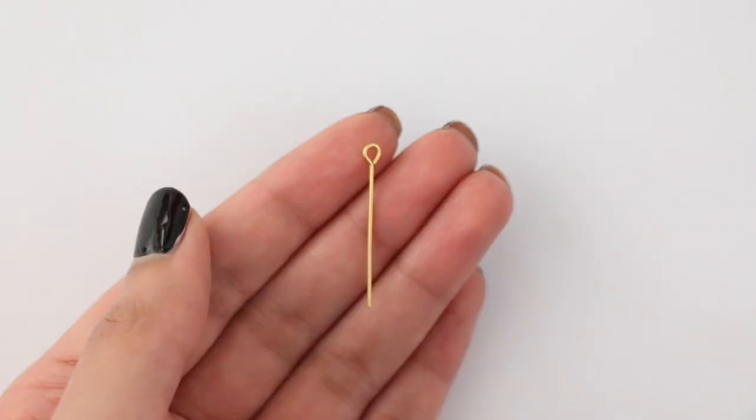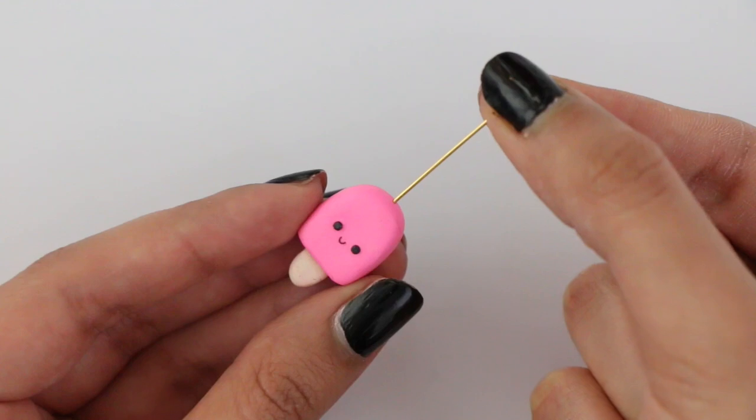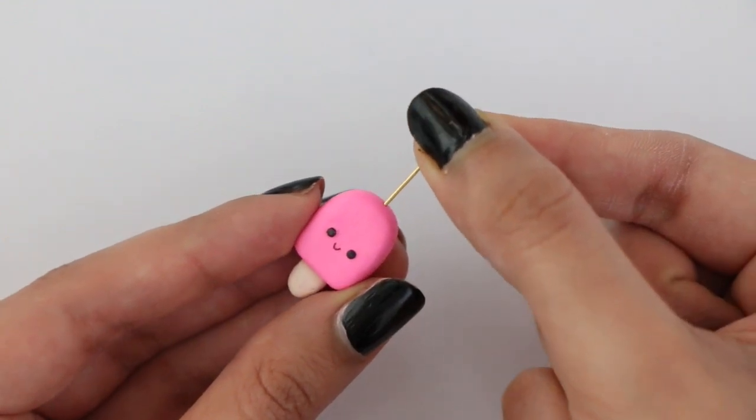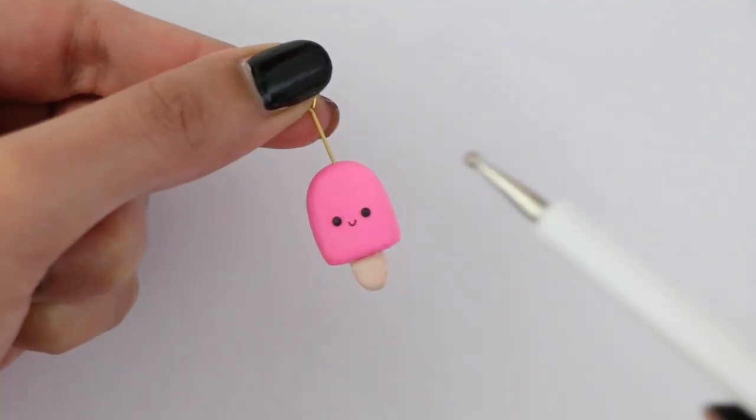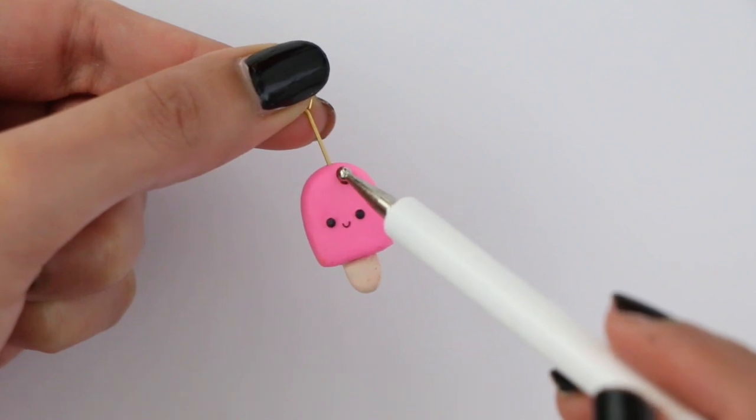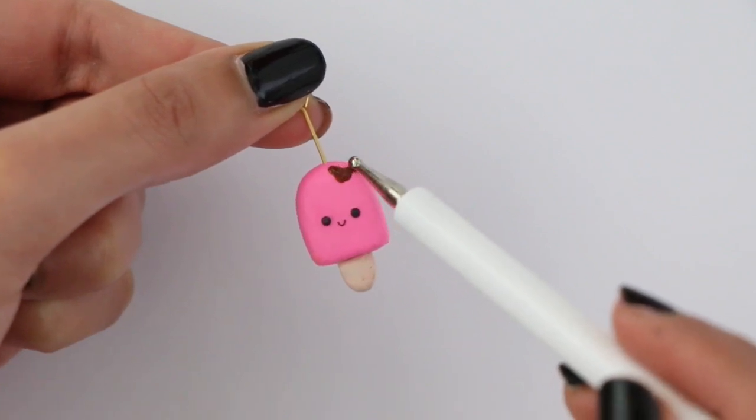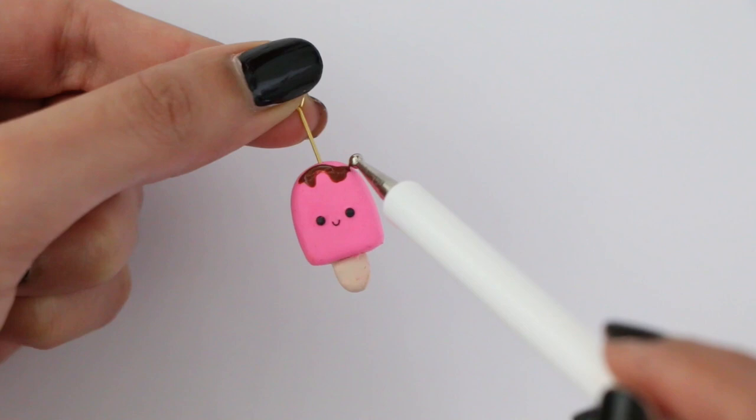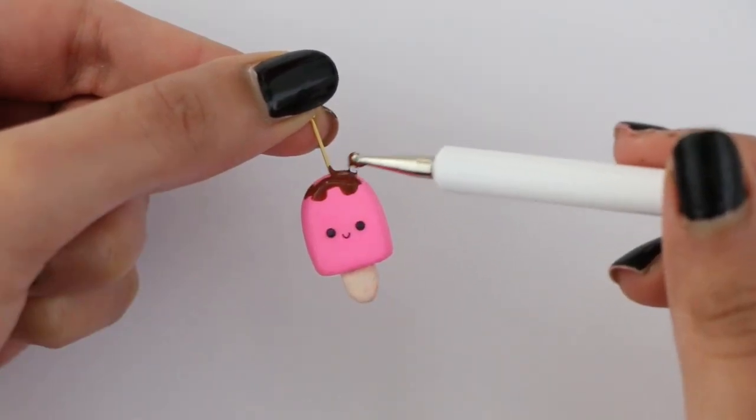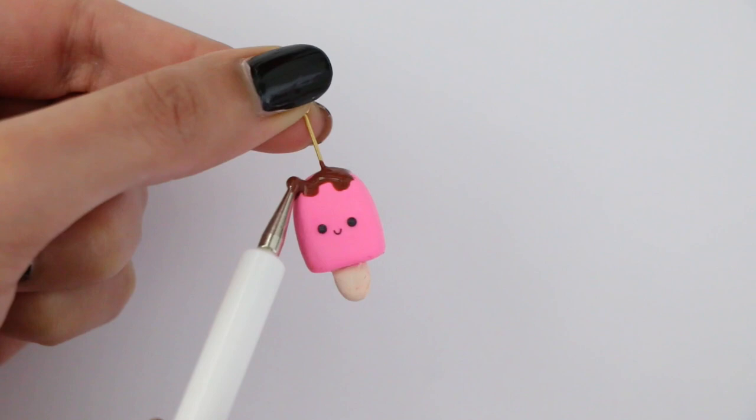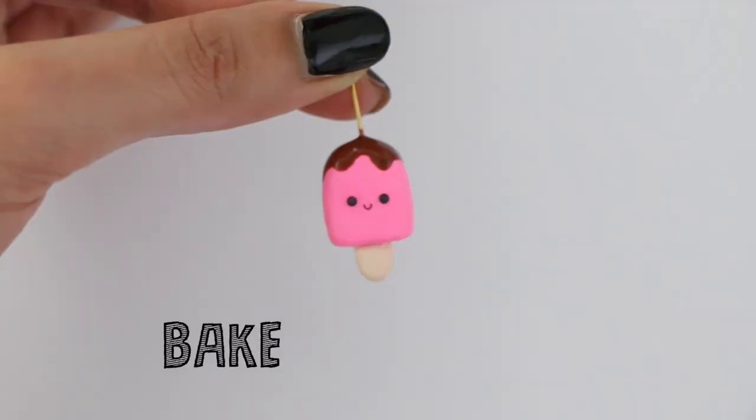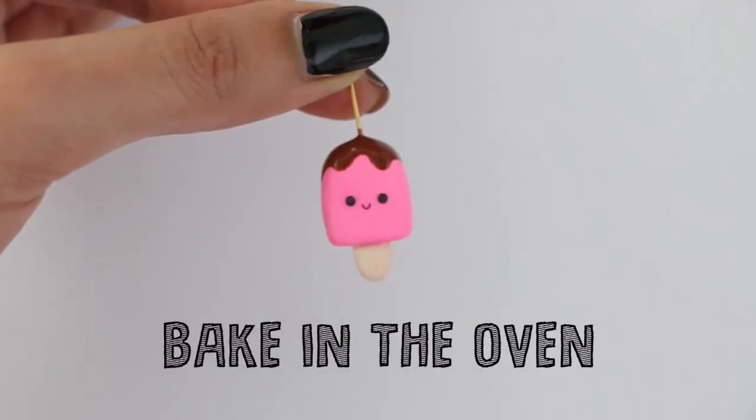I'm going to insert an eye pin, and I'm not putting it all the way through. As you can see, I put the eye pin inside because I wanted to kind of have a grip when I'm putting the chocolate on top. Now you can let that bake in the oven for 15 to 20 minutes.